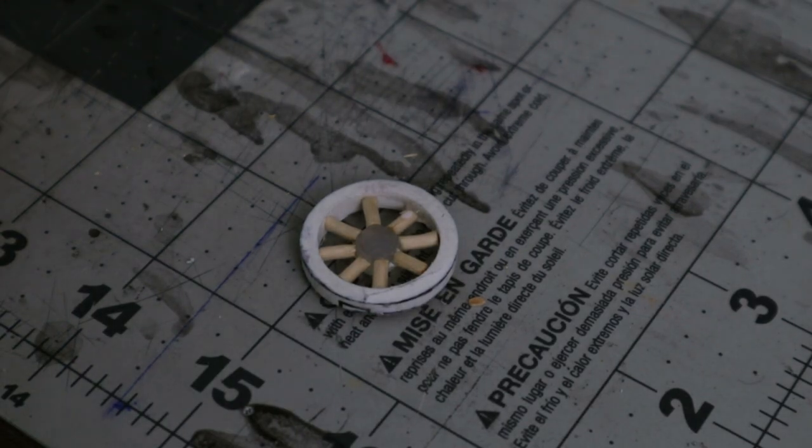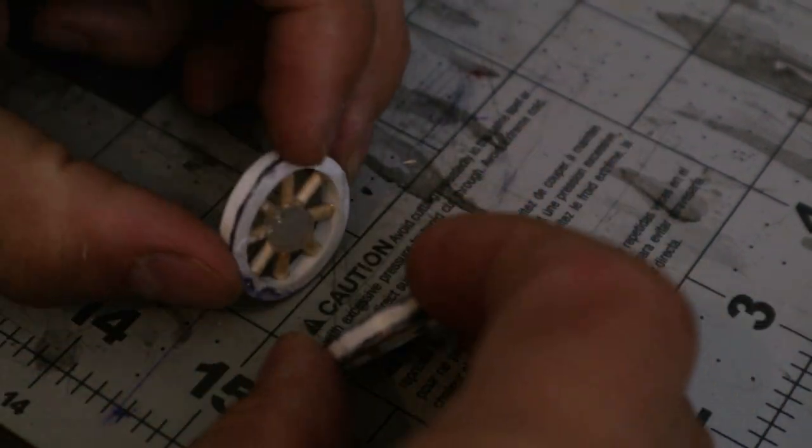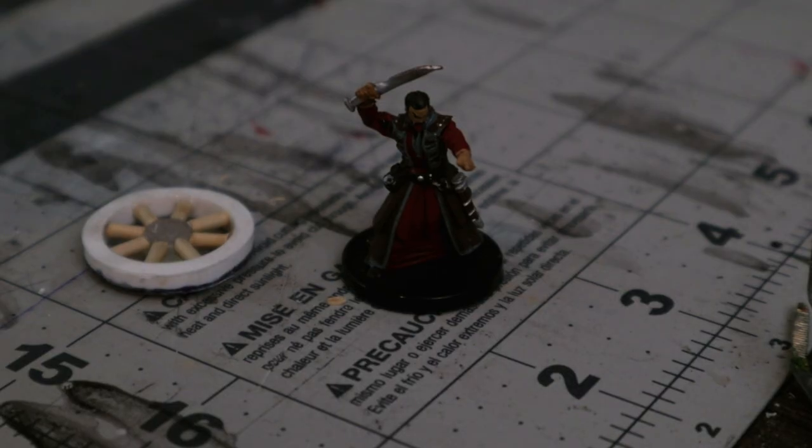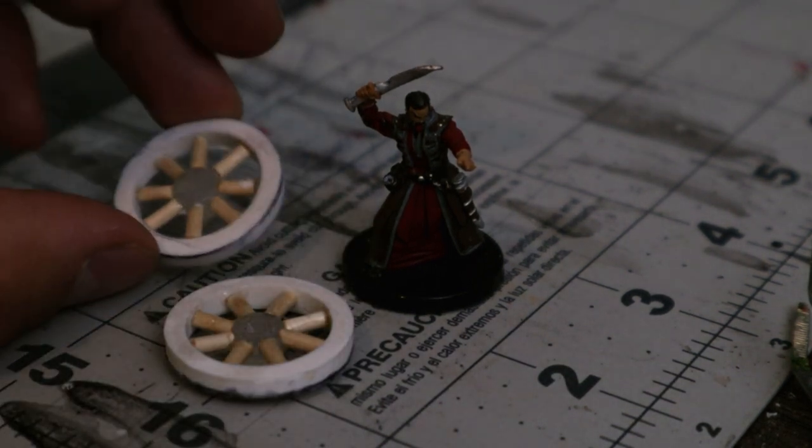After that, I super glued those in as well and made two of them. This wheel looked pretty small, but really compared to a Mini, it was one inch in diameter, so it should be to scale five feet, but it still looked kind of small.